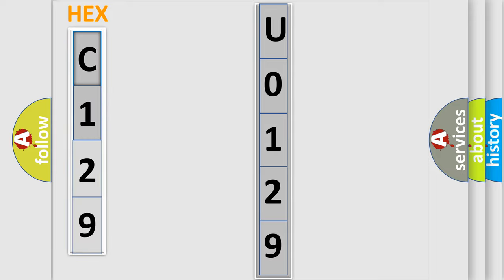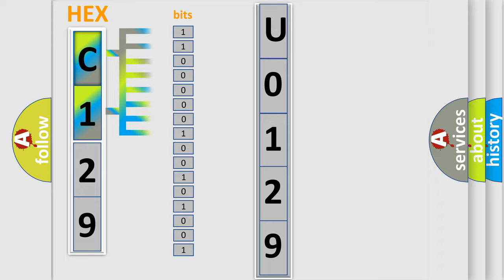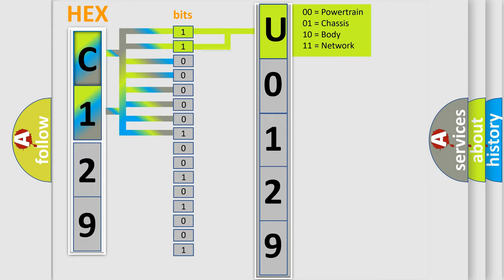The error code is split into two bytes consisting of 16 bits. One bit is the basic unit that each computer works with. The bit has two logical states: 0, low level, and 1, high level. By combining the first two bits, the basic character of the error code is expressed.